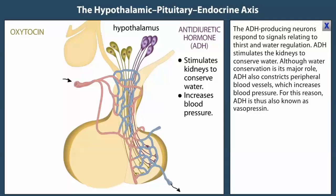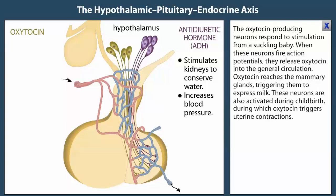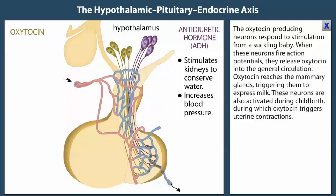The oxytocin-producing neurons respond to stimulation from a suckling baby. When these neurons fire action potentials, they release oxytocin into the general circulation. Oxytocin reaches the mammary glands, triggering them to express milk. These neurons are also activated during childbirth, during which oxytocin triggers uterine contractions.